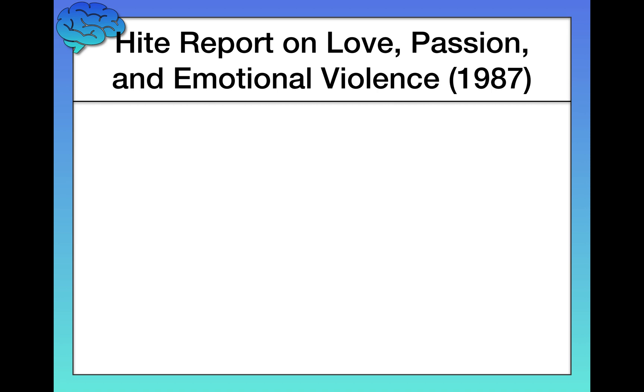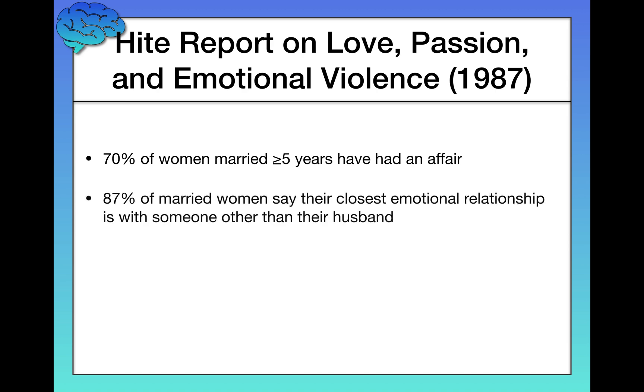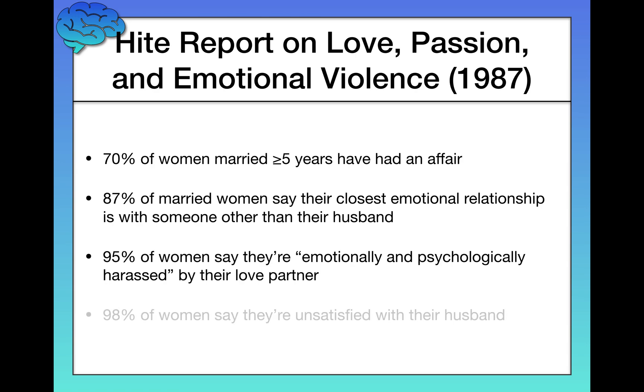Here's what the report showed: 70% of women married at least five years have had an affair. 87% of women say that their closest emotional relationship is with someone other than their husband. 95% of women say that they're emotionally and psychologically harassed by their love partner. And finally, possibly the most harrowing, 98% of women say they're generally unsatisfied with their husbands.